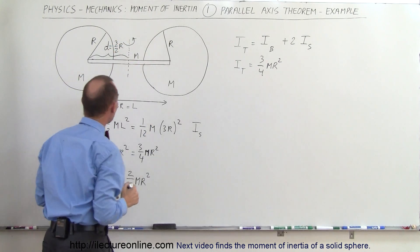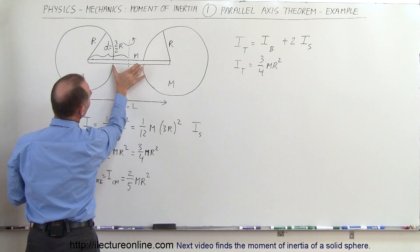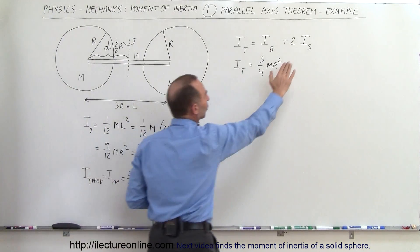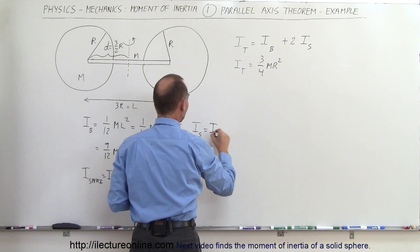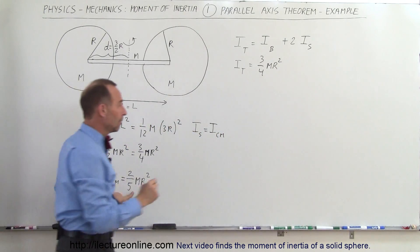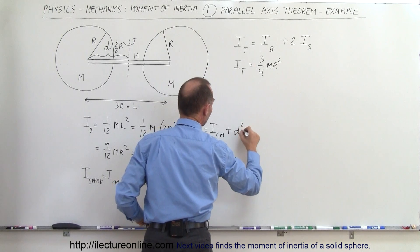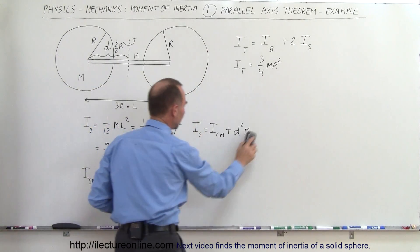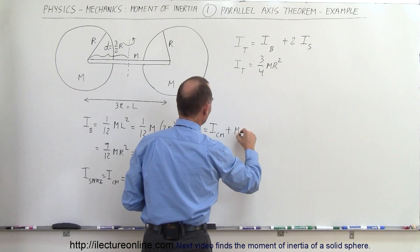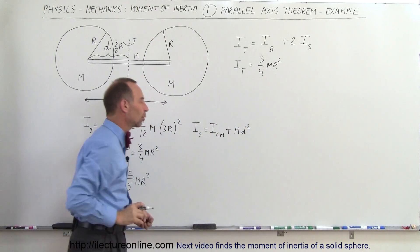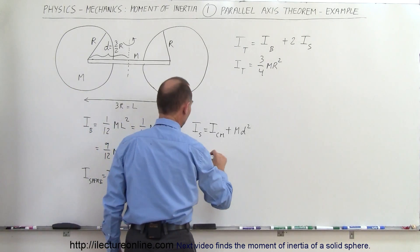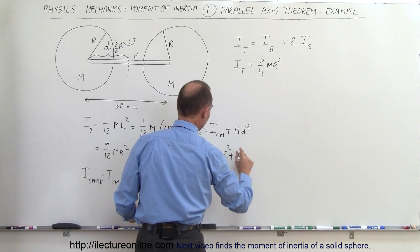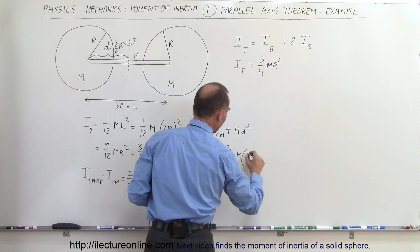The displacement d equals (3/2) r, because this side is one r, this side is one r, so the center of the sphere is one and a half times the radius away from the rotation axis. The parallel axis theorem gives us I_s = I_cm + md². Substituting, this becomes (2/5) mr² plus m times (3/2 r)² — the mass of the sphere times the displacement squared.